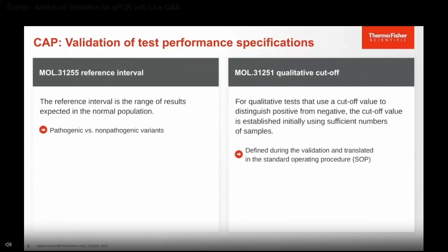For reference interval, it refers to the range of results expected in the normal human population. For qualitative cutoffs, this applies to tests that use a cutoff value to distinguish a positive from a negative sample. The cutoff value is established initially using sufficient numbers of samples, defined during the validation, and then translated into your standard operating procedures.